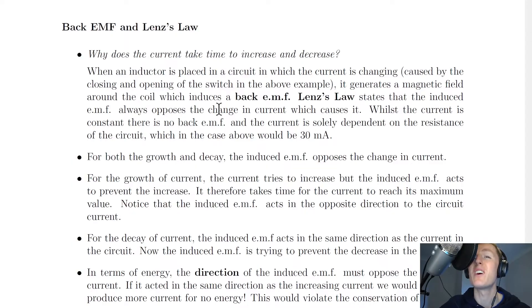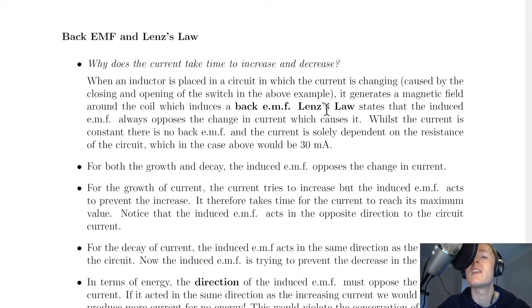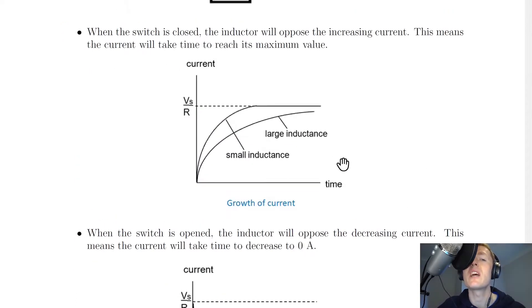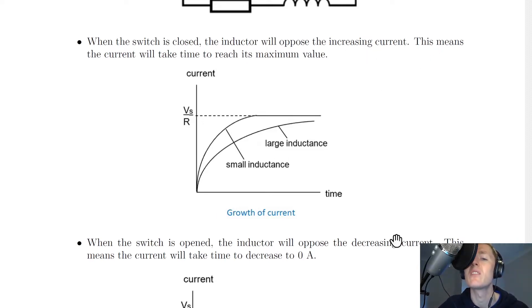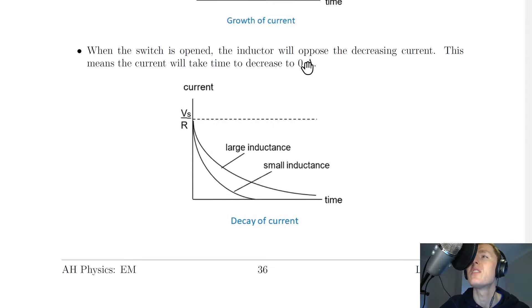Now in the previous theory video for inductors and DC circuits, we saw that for an inductor in a DC circuit, the current in the circuit will take time to increase and decrease. We're now going to use back EMF and Lenz's Law to explain why this happens. So just a reminder, we said that when the switch is closed, the inductor will oppose the increasing current and take time to increase, whereas when the switch is opened, the inductor will oppose the decreasing current and go down over time.